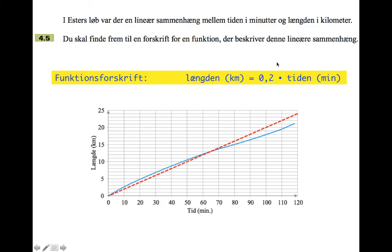When marking this, I saw a lot of people write y equals 0.2x. If you do that, you've got to tell us what x and y are, because they're not defined in the question. So if you say y equals 0.2x, somewhere you need to state that y is the length in kilometers and x is the time in minutes.